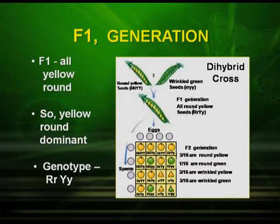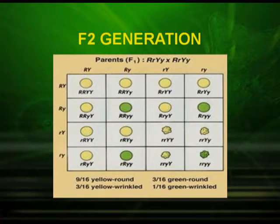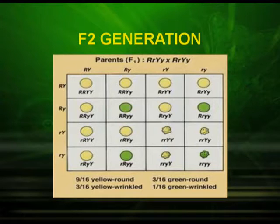In the F1 generation, he found all yellow round. So yellow round is dominant, and the genotype is written as capital R, small r, capital Y and small y. The next step was to raise the F2 generation by self-pollination. When we draw a Punnett square and analyze the result, we see that the dihybrid ratio obtained was 9:3:3:1 — of which 9 were yellow round, 3 were green round, 3 were yellow wrinkled, and only 1 was green wrinkled. This result can be depicted in the form of a Punnett square as shown in the picture.